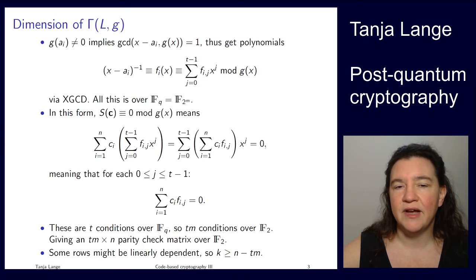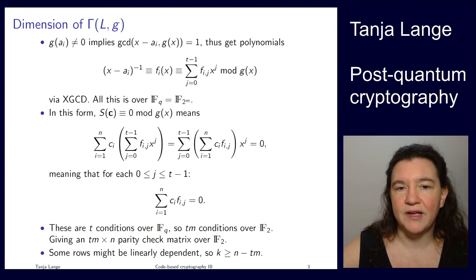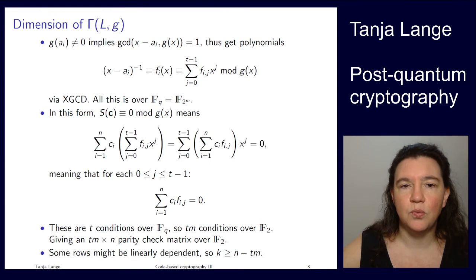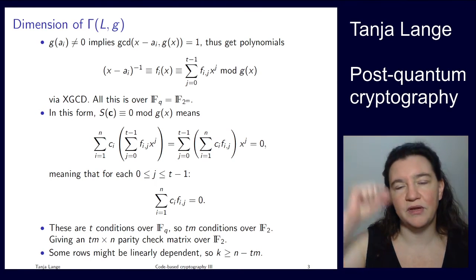We can compute the gcd using extended gcd, and so we're getting this long polynomial fi. And so fi is the inverse of x minus ai. So what we're actually having there in this s of c, that being zero mod g of x, we can also write, it's a polynomial equation, so replacing the 1 over x minus ai by this fi of x, and then putting in all the coefficients. Now these fi, having coefficients fi, those coefficients live over the big field. So those live over F2 to the m.